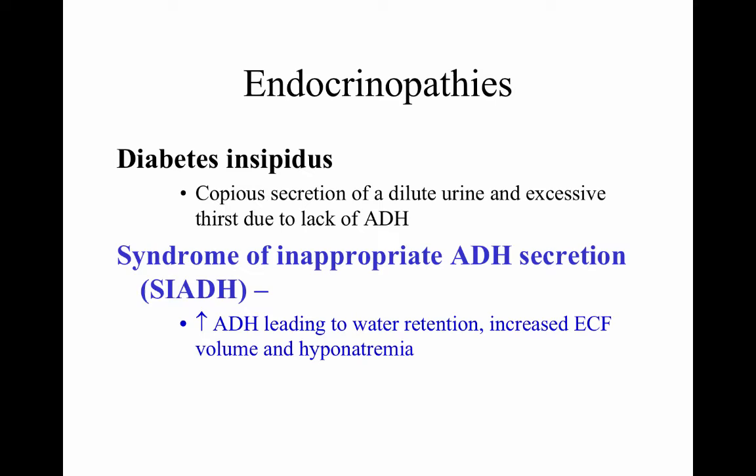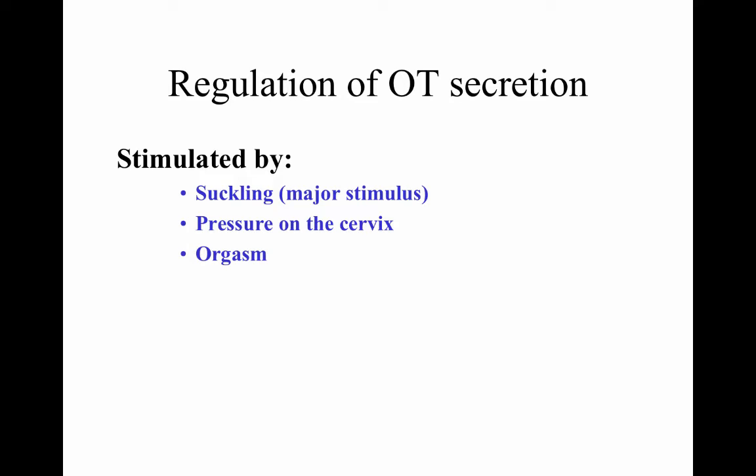There is also a syndrome of inappropriate ADH secretion — SIADH — where increased antidiuretic hormone leads to water retention, increased extracellular fluid volume, and hyponatremia. Hyponatremia means decreased serum sodium concentration caused by excessive water relative to solute. Common causes include SIADH, where so much water is retained that electrolyte balance is severely disrupted — a very dangerous syndrome.